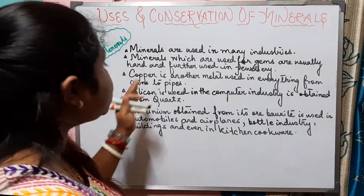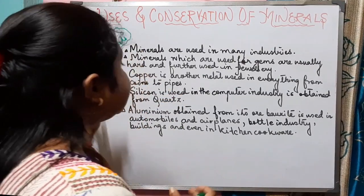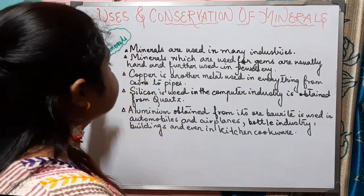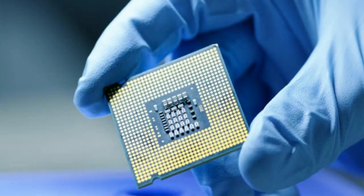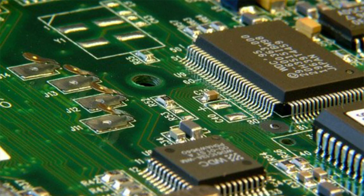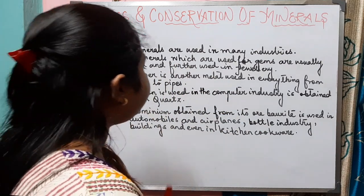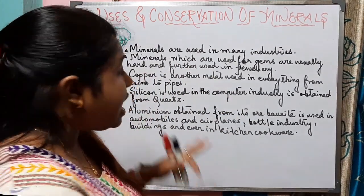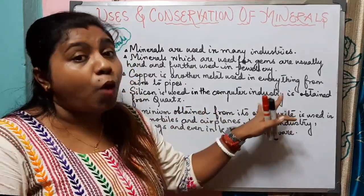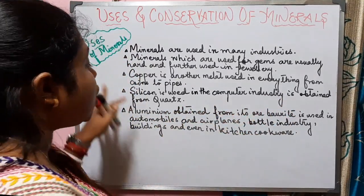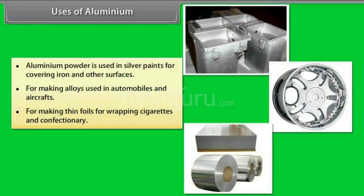The next mineral that is very useful is silicon. Silicon is used in the computer industry — the silicon chips are obtained from quartz — so silicon is very important. The next important mineral is aluminium. Aluminium is obtained from its ore bauxite and is used in automobiles, aeroplanes, bottling industries, kitchen cookware, and buildings.